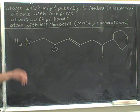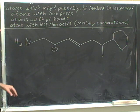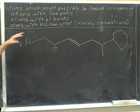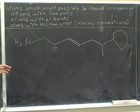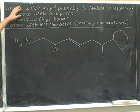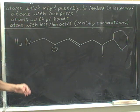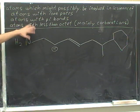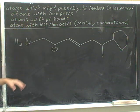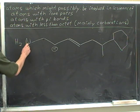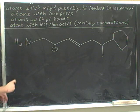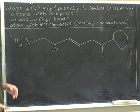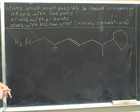Even though the nitrogen has a lone pair, it has nothing to resonate with. In order to be involved in resonance, you have to have one of these three characteristics and you have to be bonded to another atom that also has one of these three characteristics. So even with a lone pair, this atom cannot participate in resonance because it's not bonded to anybody it can resonate with.